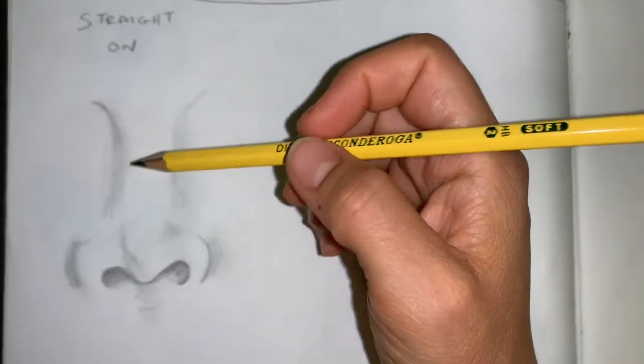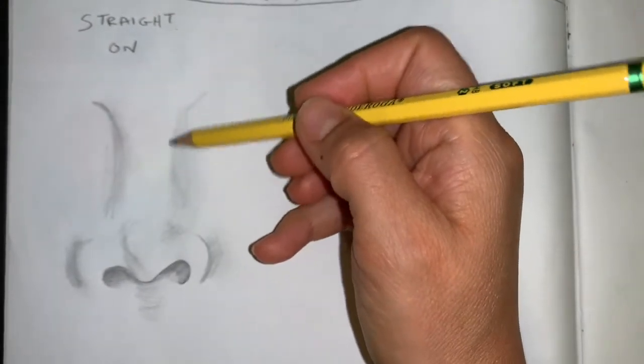All right, so we've gotten to this point in the nose. Again, this is straight on. There's just a little thing to do to clean it up. We want to straighten the bridge of our nose slightly.